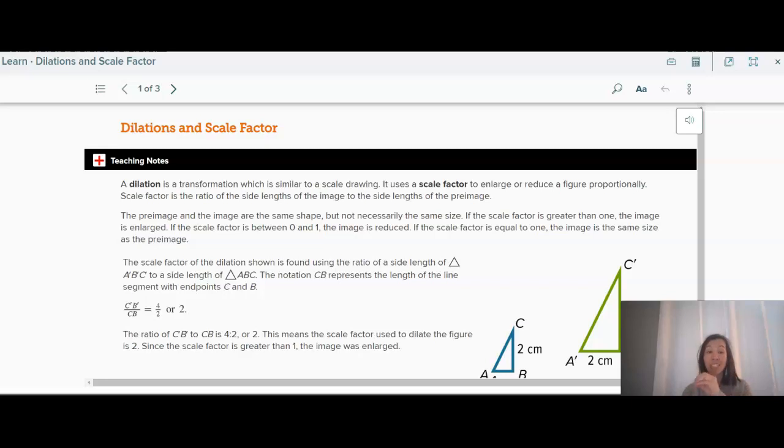Those three transformations only change the position of the object, whereas a dilation actually changes the size and shape of the object. So the only one that changes the actual size, it'll still be the same shape, but it'll enlarge it or shrink it.